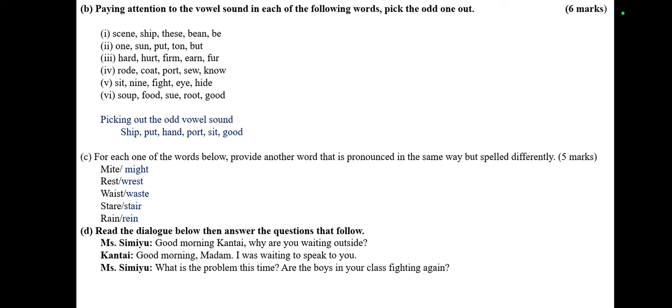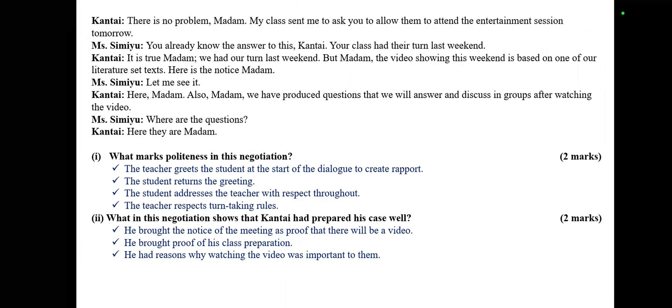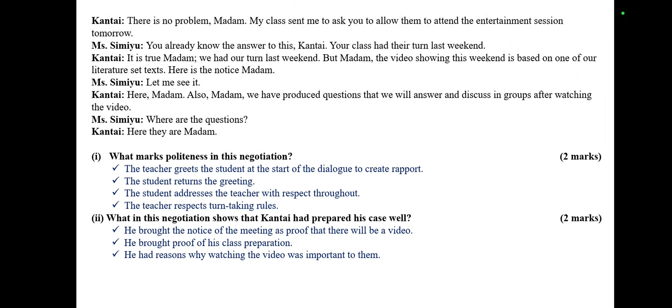Read the dialogue below then answer the questions that follow — that is part D, a performance question. Mrs. Miu: 'Good morning, Kantai. Why are you waiting outside?' Kantai: 'Good morning, madame. I was waiting to speak to you.' Mrs. Miu: 'What is the problem this time? Are the boys in your class fighting?' Kantai: 'There is no problem, madame. My class sent me to ask you to allow them to attend the entertainment session tomorrow.' Mrs. Miu: 'You already know the answer to this, Kantai. Your class had their turn last weekend.' Kantai: 'It is true, madame, we had our turn last weekend. But madame, the video showing this weekend is based on one of our literature set texts. Here is the notice, madame.' Mrs. Miu: 'Let me see it.' Kantai: 'Here, madame. Also, madame, we've produced questions that we will answer and discuss in groups after watching the video.' Mrs. Miu: 'Where are the questions?' Kantai: 'Here they are, madame.'